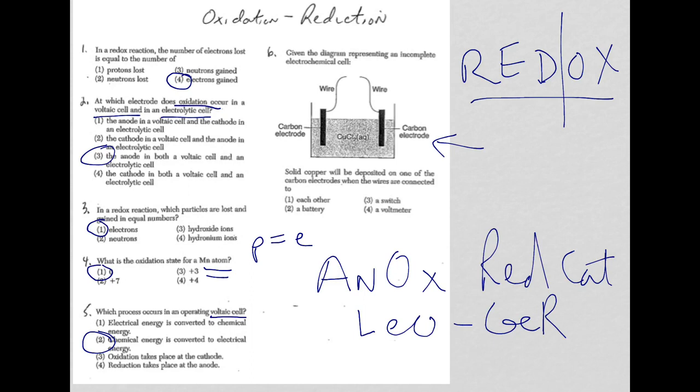And since this is an electrolytic cell, we're going to take electrical current and we're going to go ahead and force a redox reaction to happen. So electrical energy to chemical. In other words, we need a power source here and it's missing, and that power source is a battery.